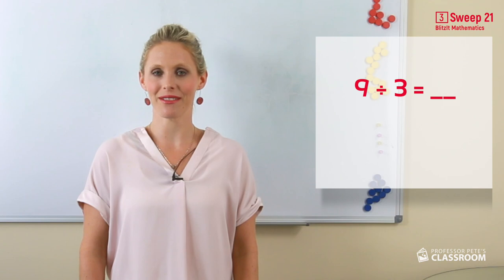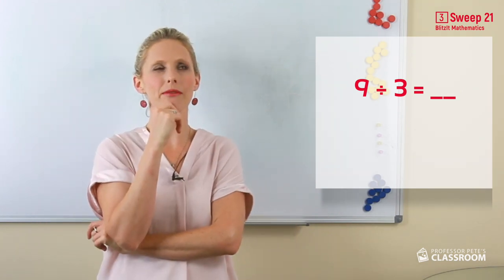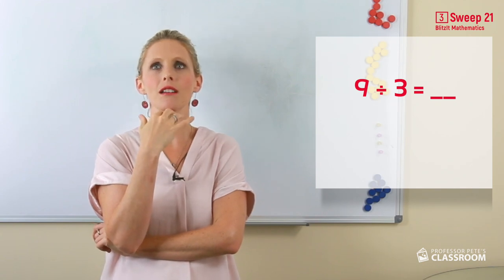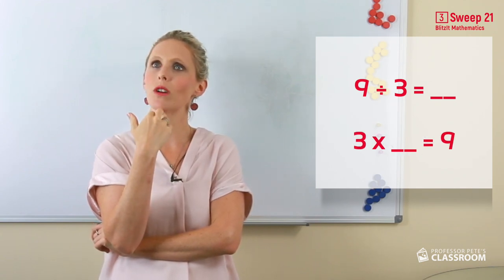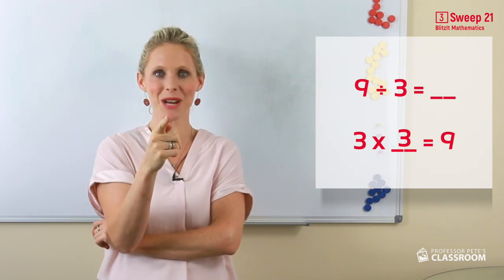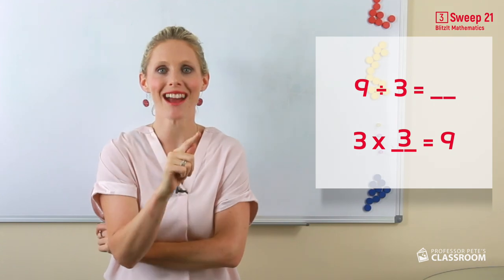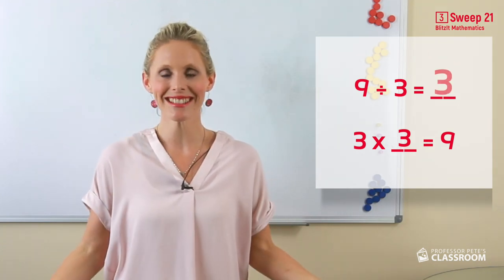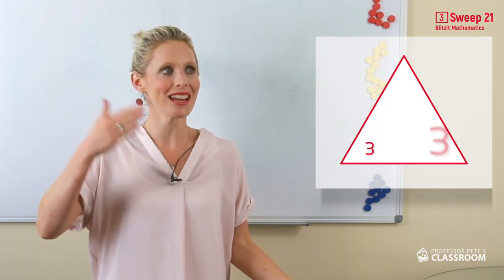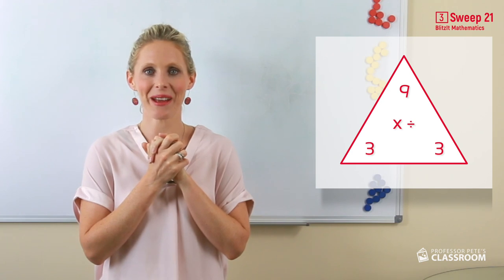9 divided by 3. What number fact do we know? 3 times what equals 9? 3 threes equal 9. Therefore 9 divided by 3 equals 3, and we know then that 3 threes equal 9. They are a family.